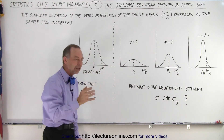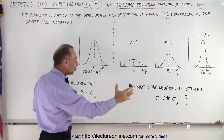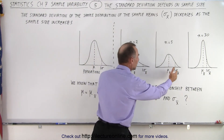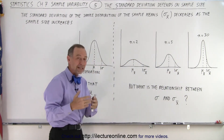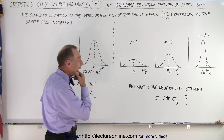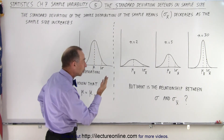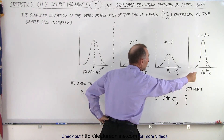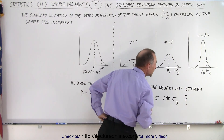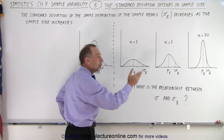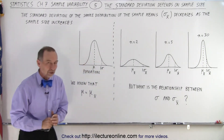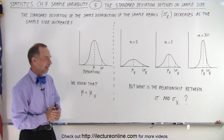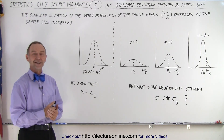We are looking for a relationship between the standard deviation of the population and the standard deviation of the distribution of the sample means. We realize that the larger the sample size, the smaller the standard deviation of the sample means, and so we need to come up with that relationship. If you're interested, we'll explain that in the next video — so yes, this is another one of those cliffhangers.